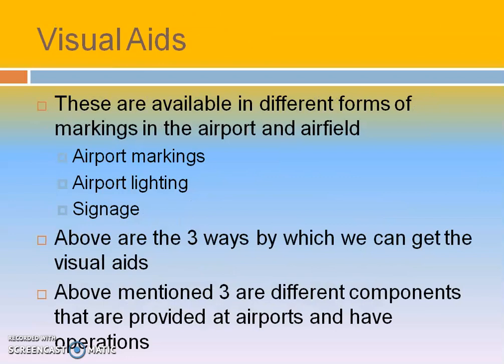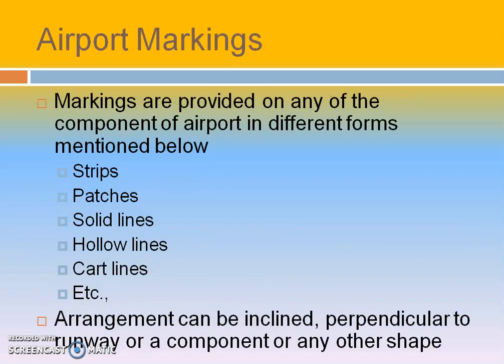What are the types of visual aids? One is by means of marking, by means of paints. The next one is by means of lighting — bright lights are provided so that pilots will be able to understand the positioning of the runway at a greater height. The next one is signing, just like our roads, where we can provide sign boards. These are the three ways of providing visual aids.